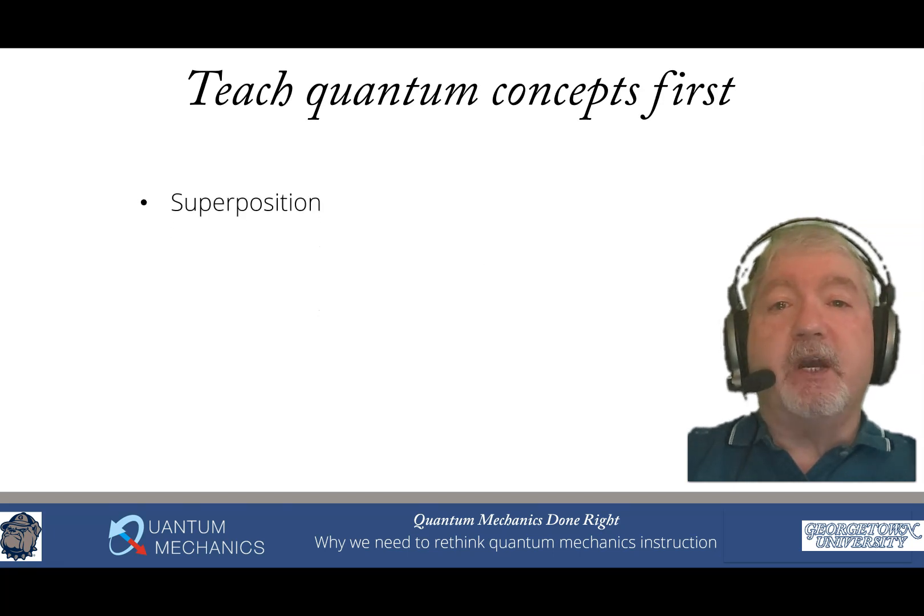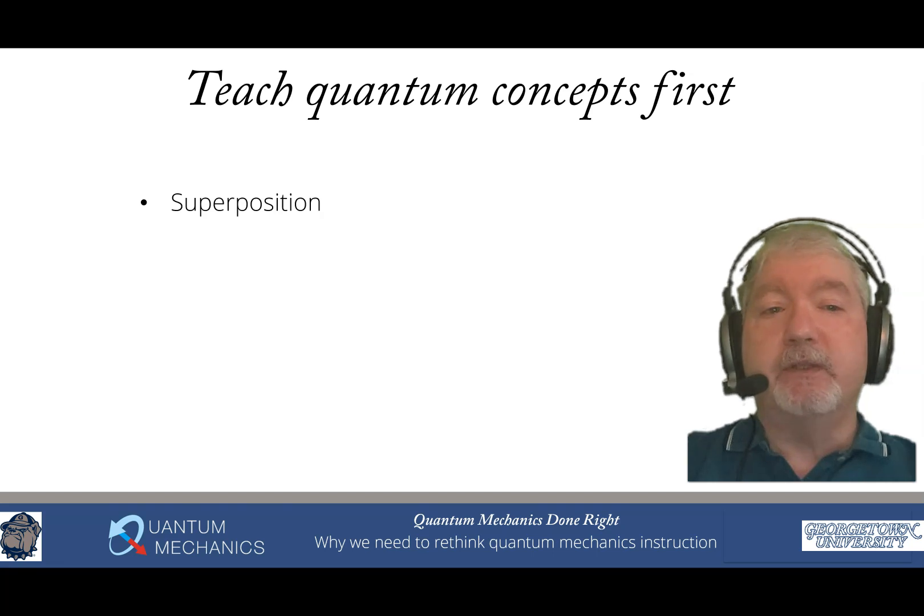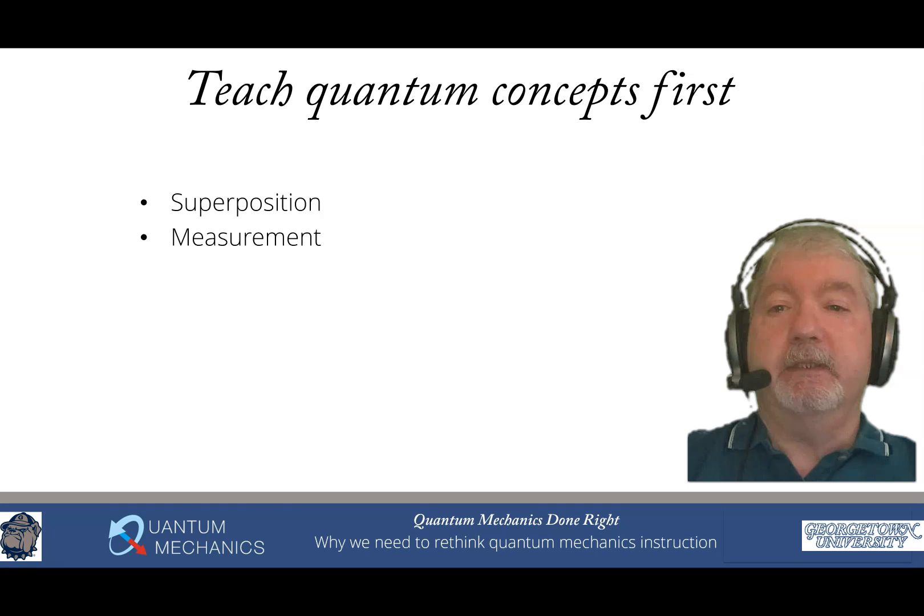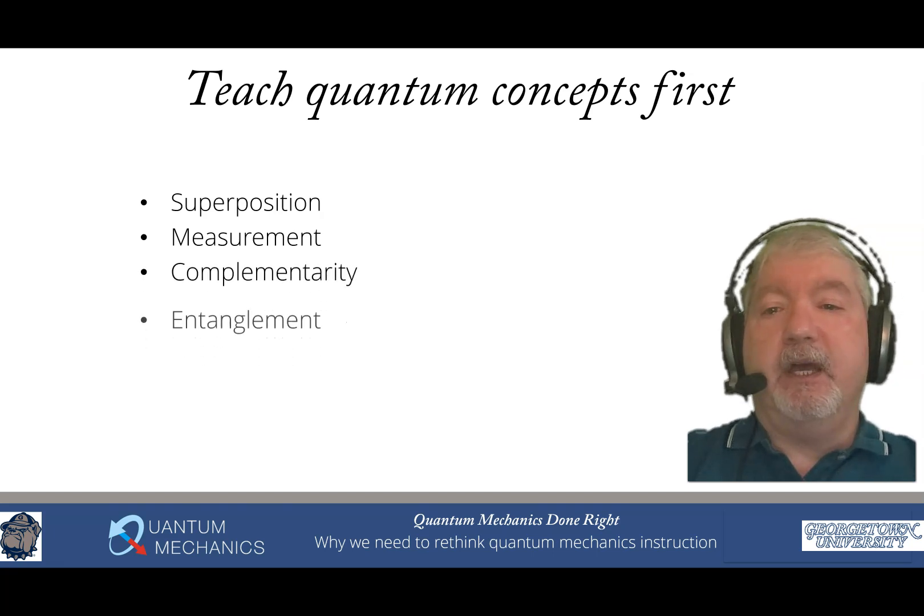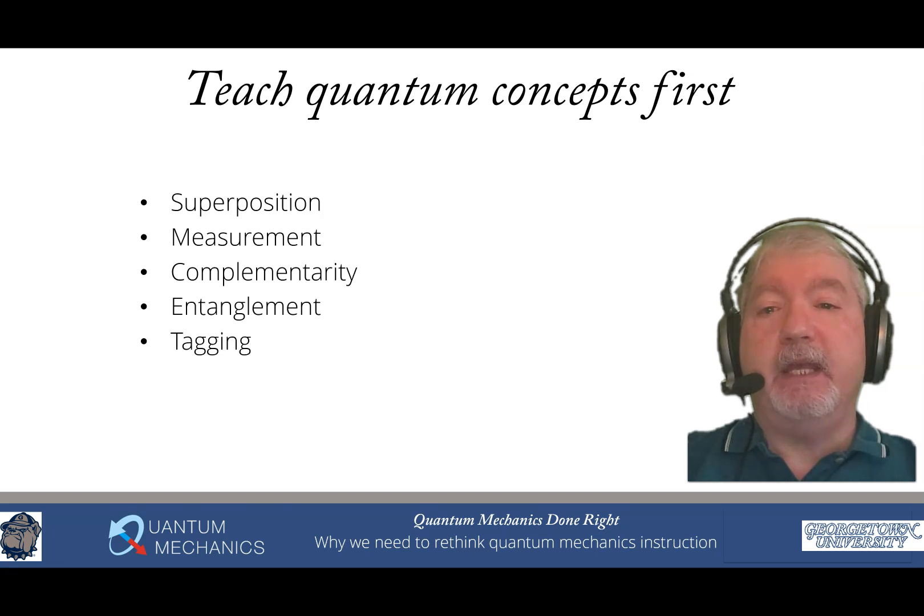We're going to teach the quantum concepts first. We want people to be able to reason quantum mechanically. That includes understanding what superposition means, understanding what measurement means, understanding what complementarity means, understanding what entanglement means, and understand what tagging means. Tagging is when you create an entangled state in a reversible way where you can reverse the entanglement. These five concepts, just by working with these five concepts, you can actually analyze many, many of the modern experiments that exist. And this is exactly what we do in the book that I have developed. The first four chapters focus just on conceptual ideas and enable you to think conceptually about different quantum experiments.